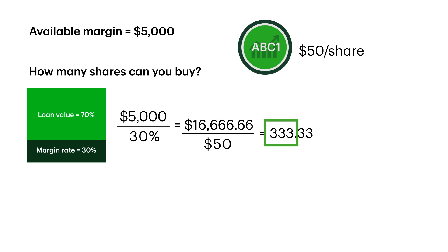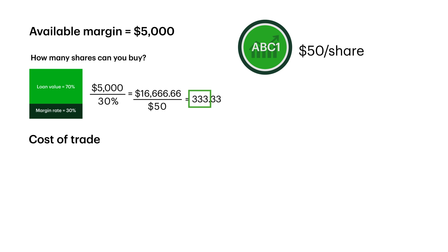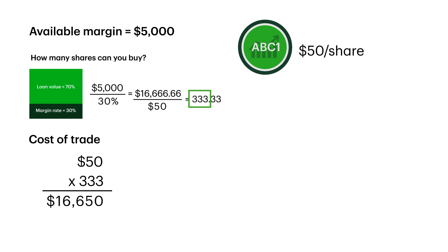It's also a good idea to leave enough margin buffer to pay for any applicable commissions for your trades. To find out the total cost of the trade, we multiply $50 by 333. This shows that the trade would cost $16,650. Remember, if you're looking at buying U.S. stocks, use the U.S. dollar equivalent value.